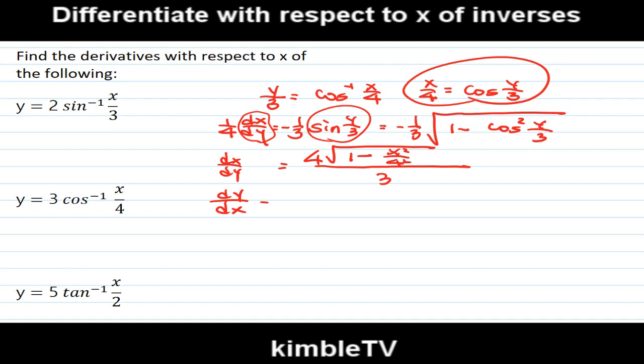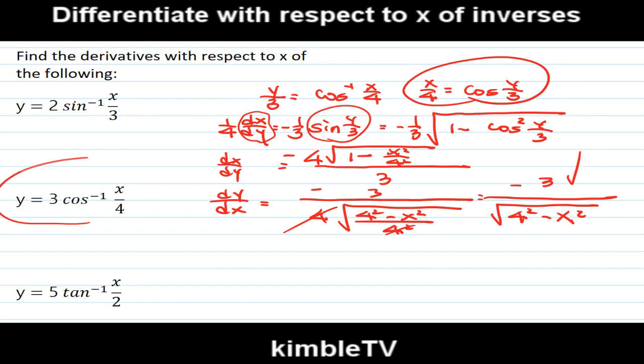Therefore 4 here, and dy/dx equals -4/√(1 - x²/16). This is -4/√((4² - x²)/16) = -3/√(4² - x²). This is the derivative of this one.